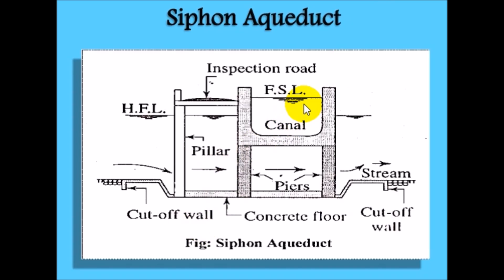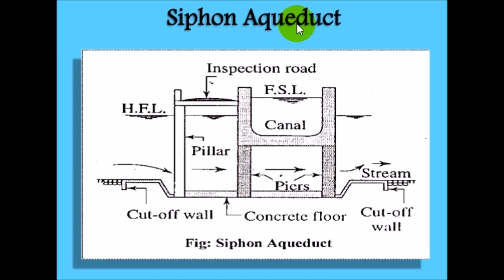In this video we'll discuss the aqueduct and particularly a siphon aqueduct. Generally the watershed canal does not cross natural drainage, but in actual orientation of the canal network this ideal condition may not be available. Obstacles like natural drainage such as a river may be present across the canal, so cross drainage works must be provided for the running of the irrigation system. A siphon aqueduct is a cross drainage structure.